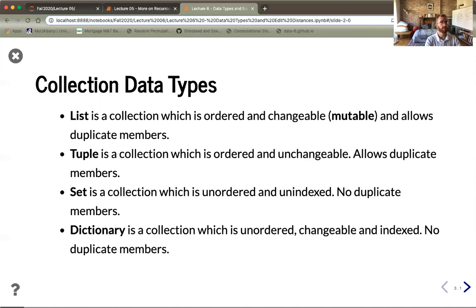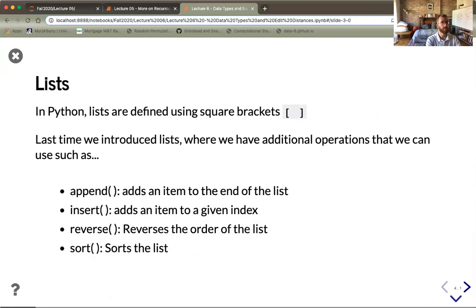Additionally there's the notion of a tuple. A tuple is essentially like a list, it's ordered, but the key difference is it is not mutable, it's immutable, it's unchangeable. And then finally there's the notion of a set. A set is a collection which is unordered and unindexed but also no duplicate members are allowed.